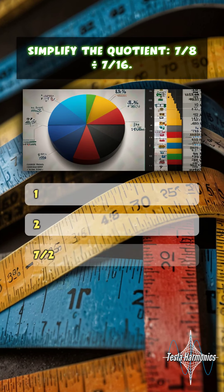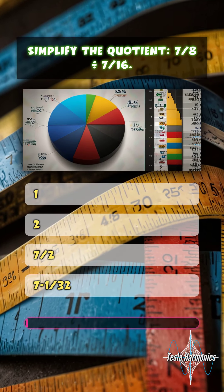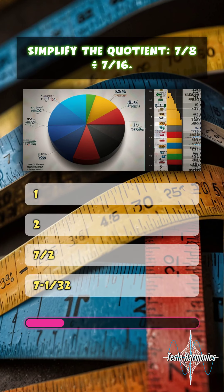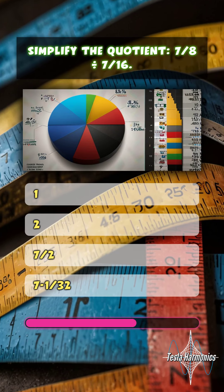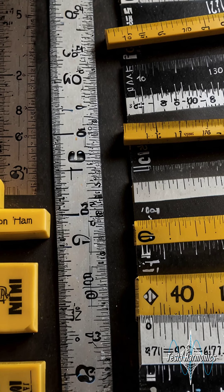Simplify the quotient: 7 eighths divided by 7 sixteenths. 2.